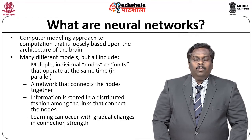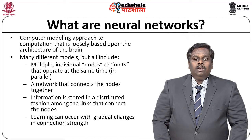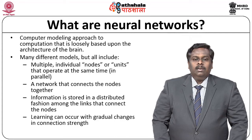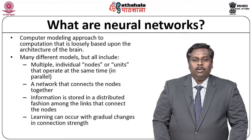The second important component of any neural network-based model is the network itself, because every node in the network must be interconnected, and therefore the network structure itself forms the second important component. Thirdly, the information that is stored is in a distributed fashion, because you have multiple units and the information is distributed across all those units.